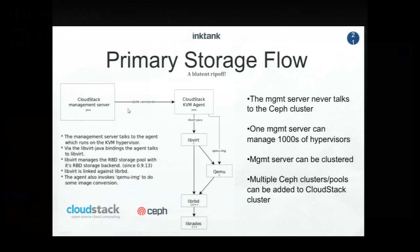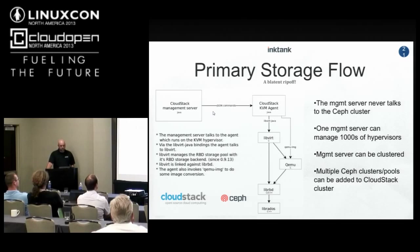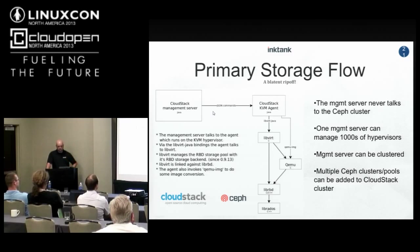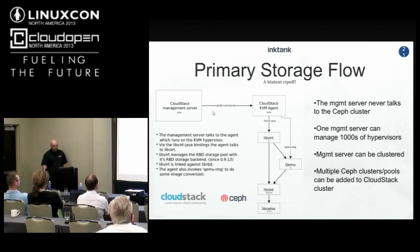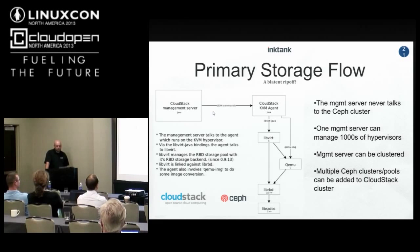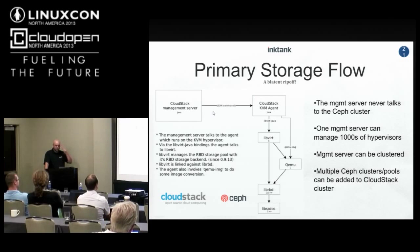This diagram — which I blatantly ripped from Vito — shows the logical flow of how things fit together, whether it's KVM or Xen. The management server talks to the agent running the KVM hypervisor. The important part is that the management server never talks to the Ceph cluster directly, which keeps a logical separation and means there's no extra layer of code to manage. One management server can manage thousands of hypervisors, and management servers can also be clustered.